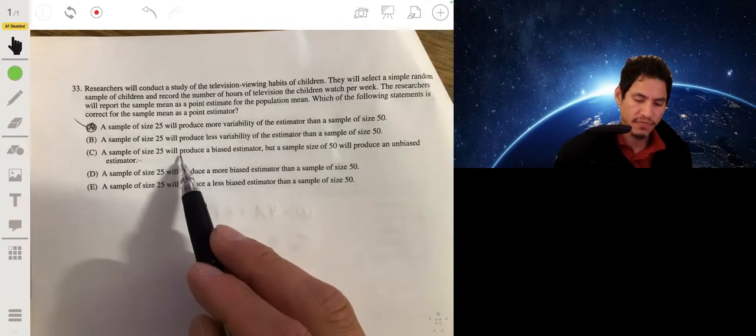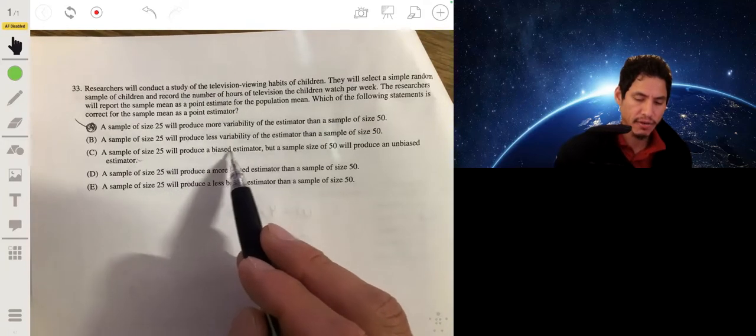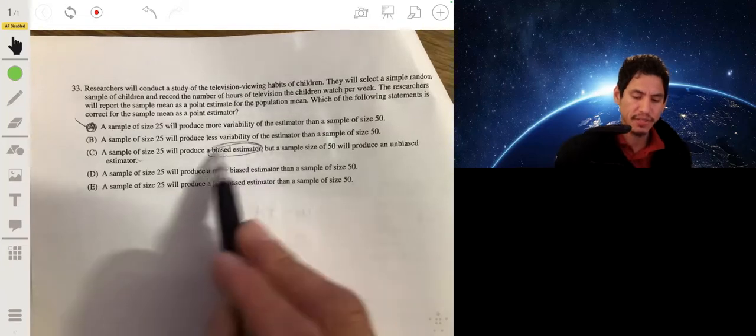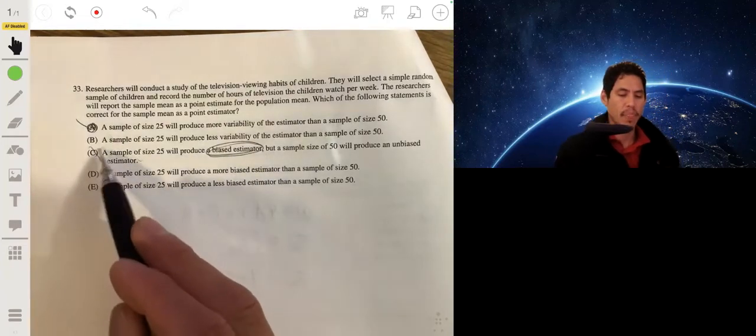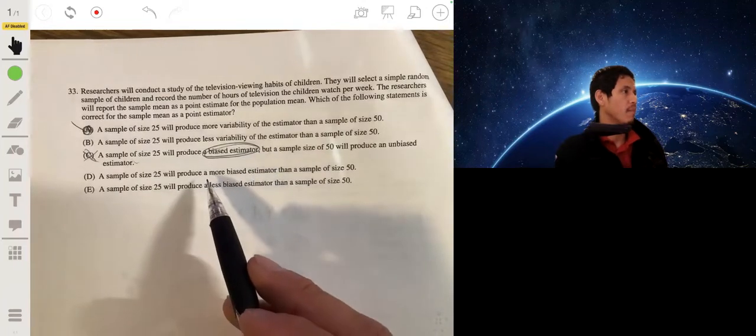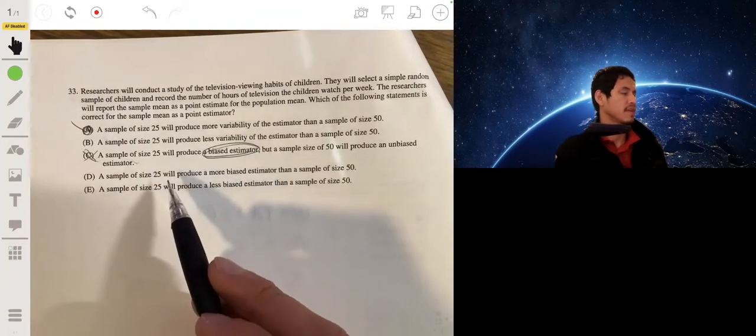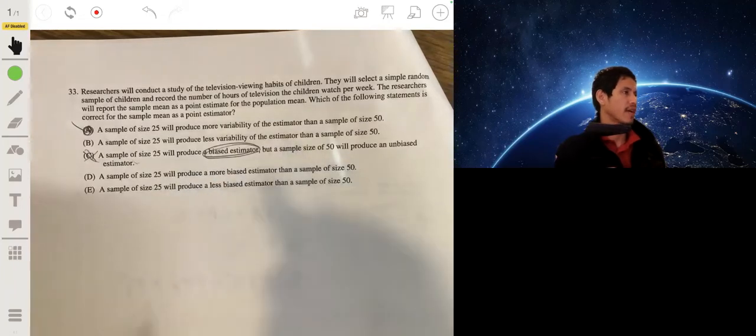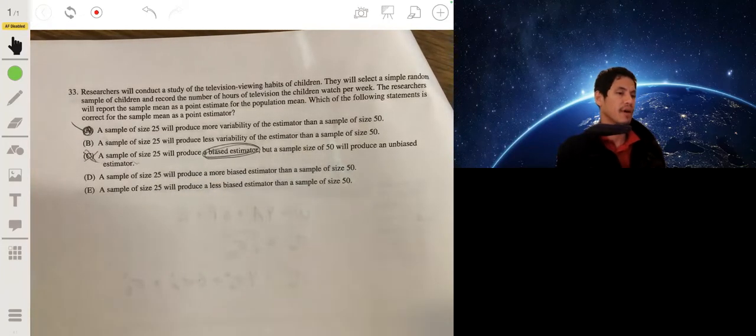So that's opposite of B, so it's obviously not B. The sample size 25 is biased? No, it's still going to be centered at the true population. And same thing, sample sizes don't really affect the bias of the estimates.